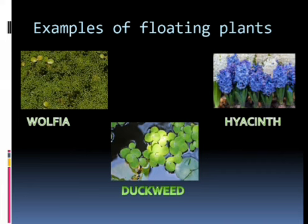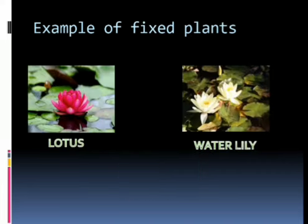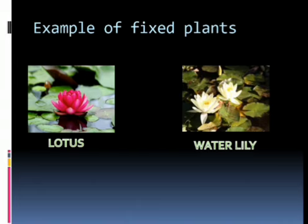Examples of fixed plants: lotus and water lily are examples of fixed plants. These plants have roots that are fixed to the bottom of ponds, but most of their vegetation is above water. They have long, hollow, and flexible stems with broad and flat leaves.